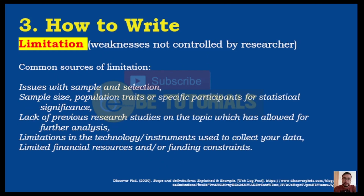Focusing on the research limitation, we should remember that this is the weakness of our research which the researcher cannot control. Some sources of limitation are as follows: issues pertaining to the sample and selection, sample size, population traits, or specific participants; lack of previous studies on the topic; limitations in the technology or instrument to be used when collecting the data; limited financial resources and funding constraints. Remember that research limitation is also a source for a research gap.